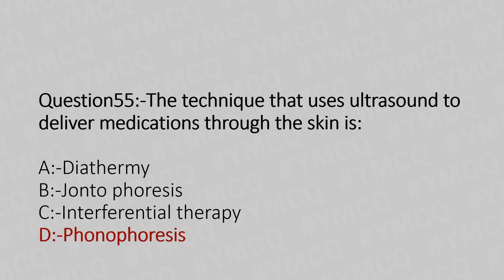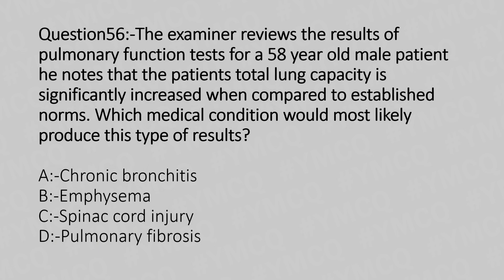Now let's move to question number 56. The examiner reviews the results of pulmonary function tests for a 58-year-old male patient. He notes that the patient's total lung capacity significantly increased when compared to established norms. Which medical condition would most likely produce this type of result? Option A, chronic bronchitis. Option B, emphysema. Option C, spinal cord injury. Option D, pulmonary fibrosis. And the answer is Option B, emphysema.